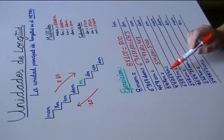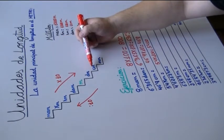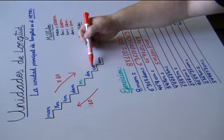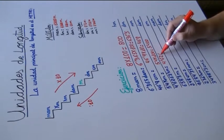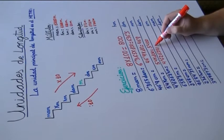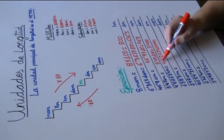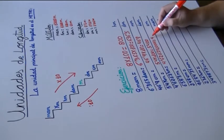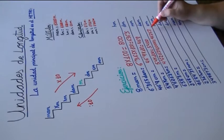4,6263 hectómetros a centímetros. De hectómetros a centímetros, los escalones que tenemos que bajar son 1, 2, 3 y 4. Multiplicamos por 10.000. 4,6263 por 10.000: desplazamos la coma hacia la derecha cuatro cifras. La coma desaparece: 46.263 centímetros.